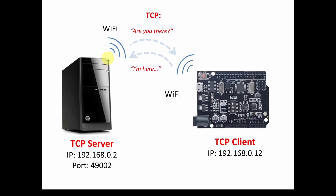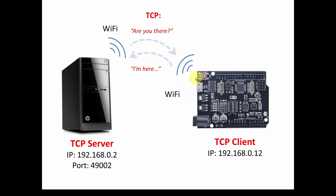We've got our server which is always listening, and our client which connects to the server. They do a protocol called a handshake, make sure they're clear on what's going to happen, and then they start communicating. We're going to have our IP addresses — for example, 192.168.0.2 and 192.168.0.12 — along with port numbers. These are the basic concepts we're going to need to talk via Wi-Fi over a network.